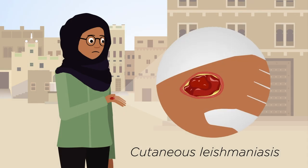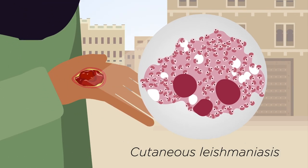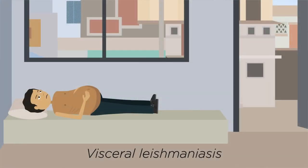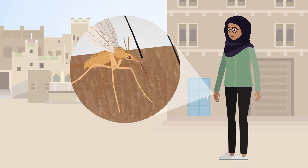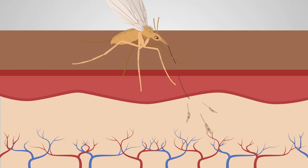Cutaneous leishmaniasis causes skin lesions, while visceral leishmaniasis is a deadly form of the disease. The parasite leishmania is transmitted by infected female sand flies, which release so-called promastigote forms into the skin during a blood meal.